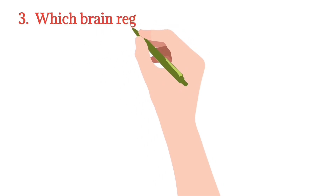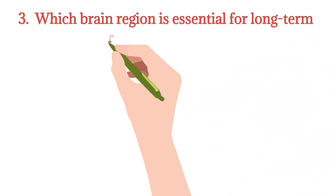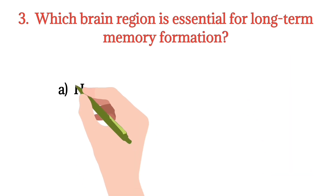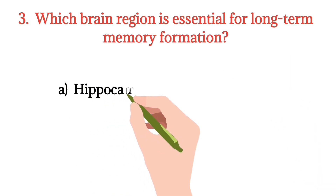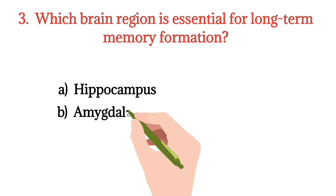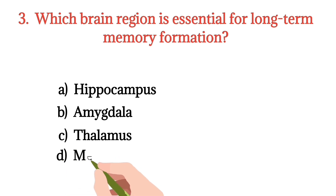MCQ number 3. Which brain region is essential for long-term memory formation? Option A: Hippocampus. Option B: Amygdala. Option C: Thalamus. Option D: Medulla. The right option is Option A.